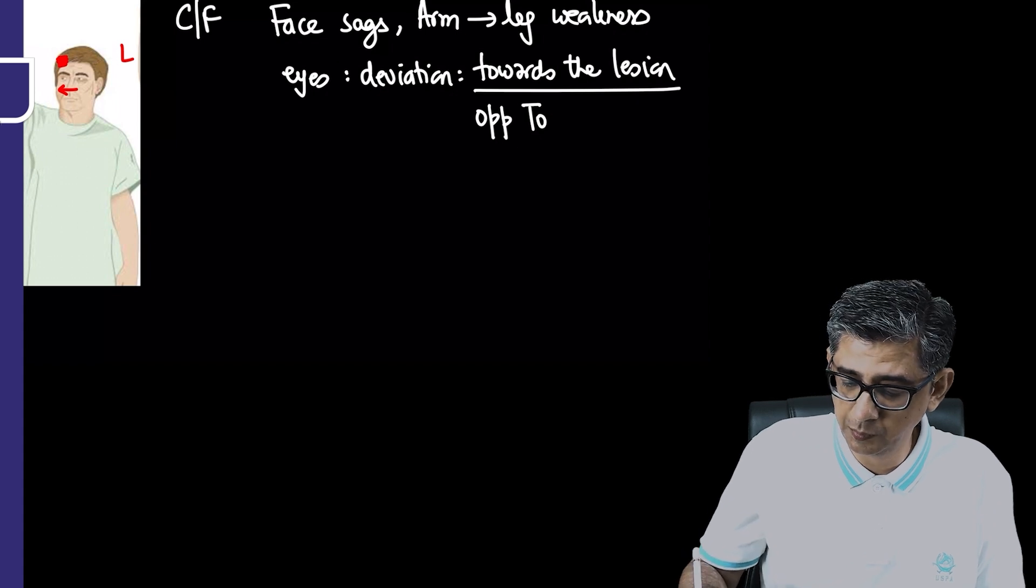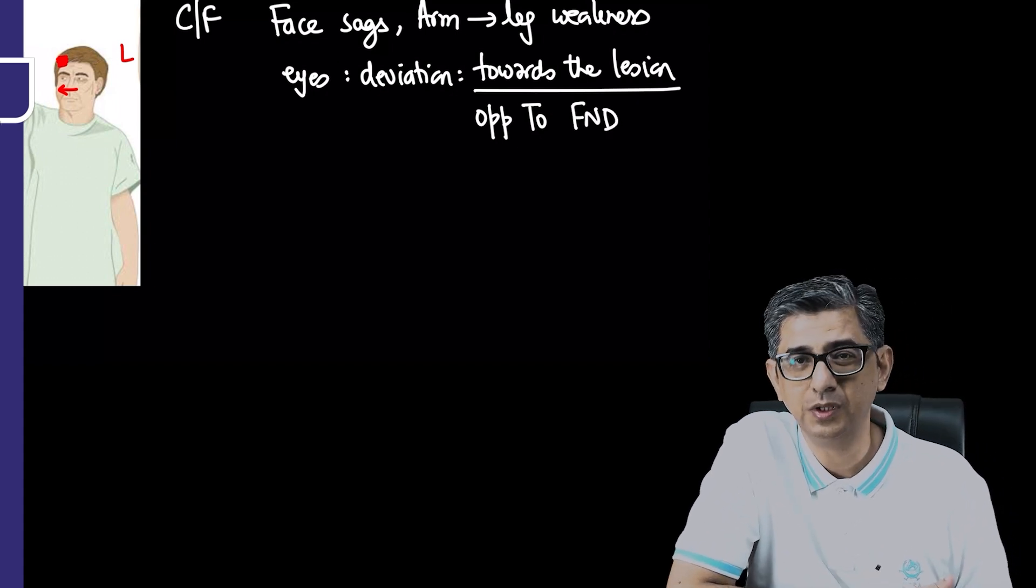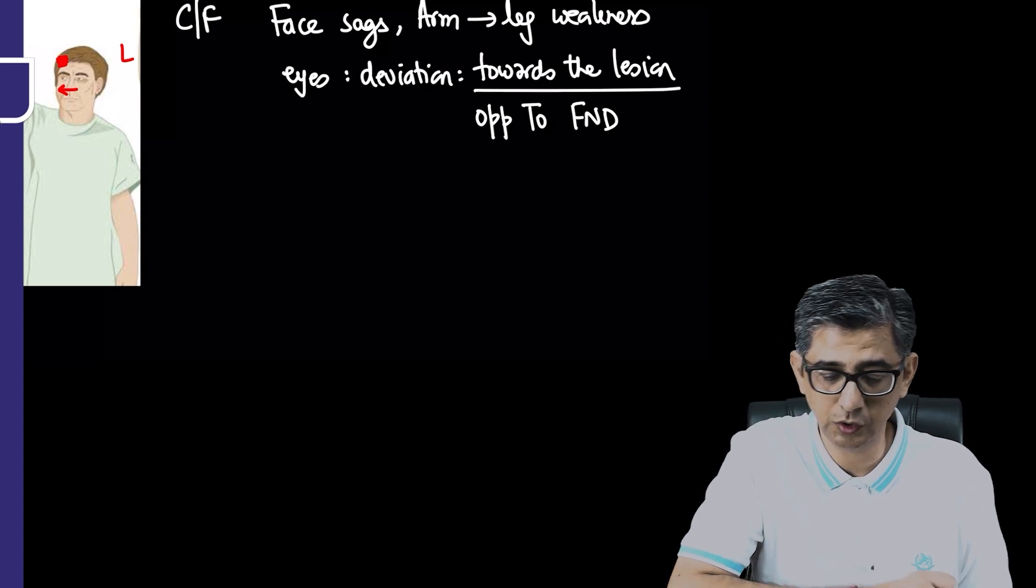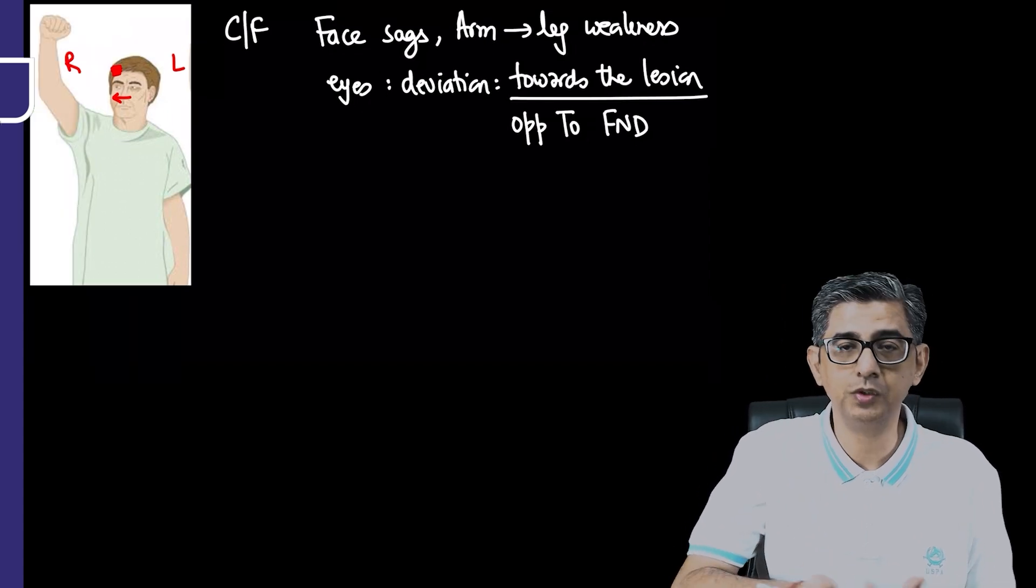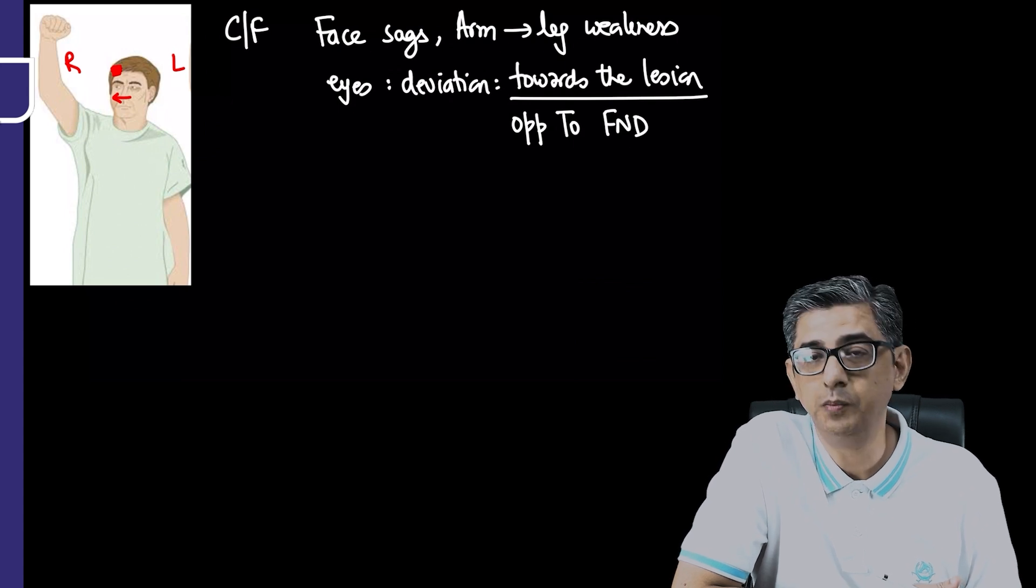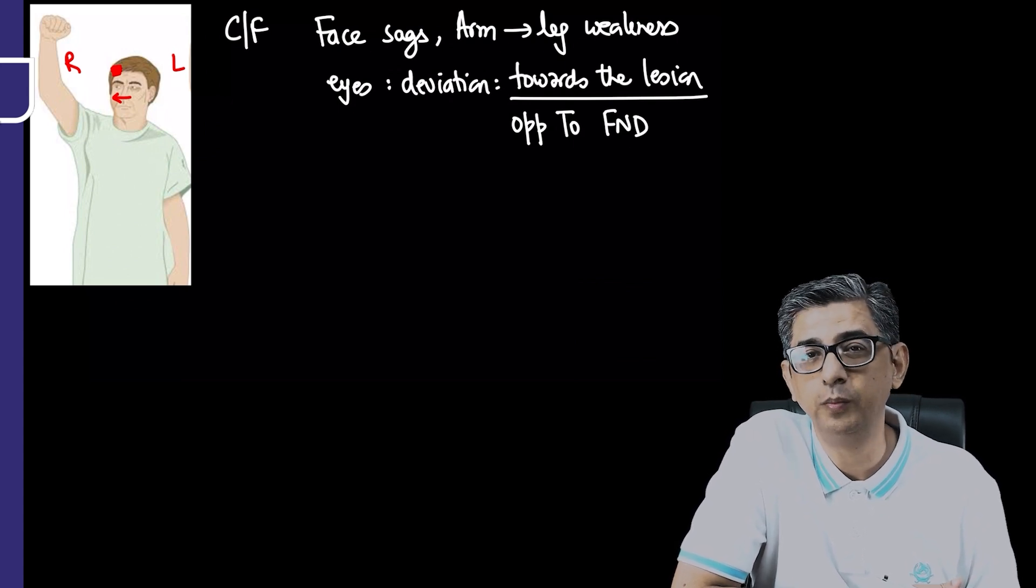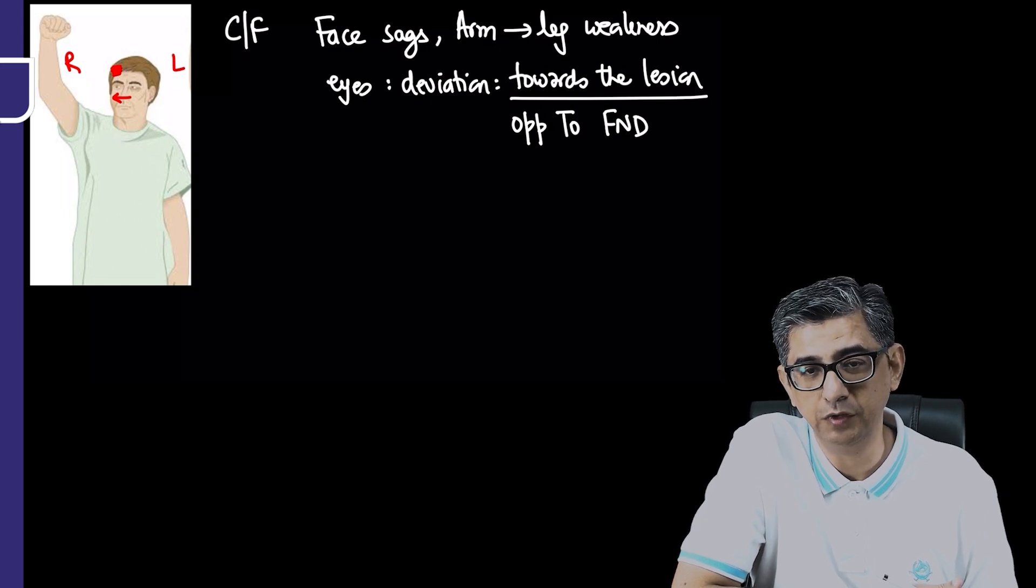This can be written in MCQs differently: the eye deviation will always occur opposite to the side of weakness, opposite to hemiplegia or focal neurological deficit. It's straightforward but in an exam with limited time, this can go wrong. So let's quickly practice.